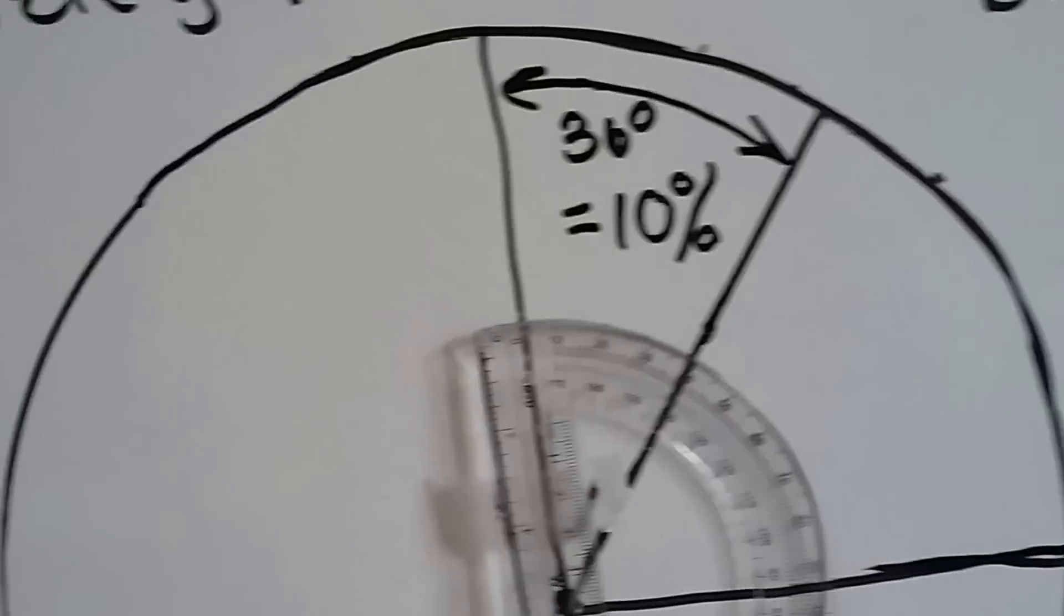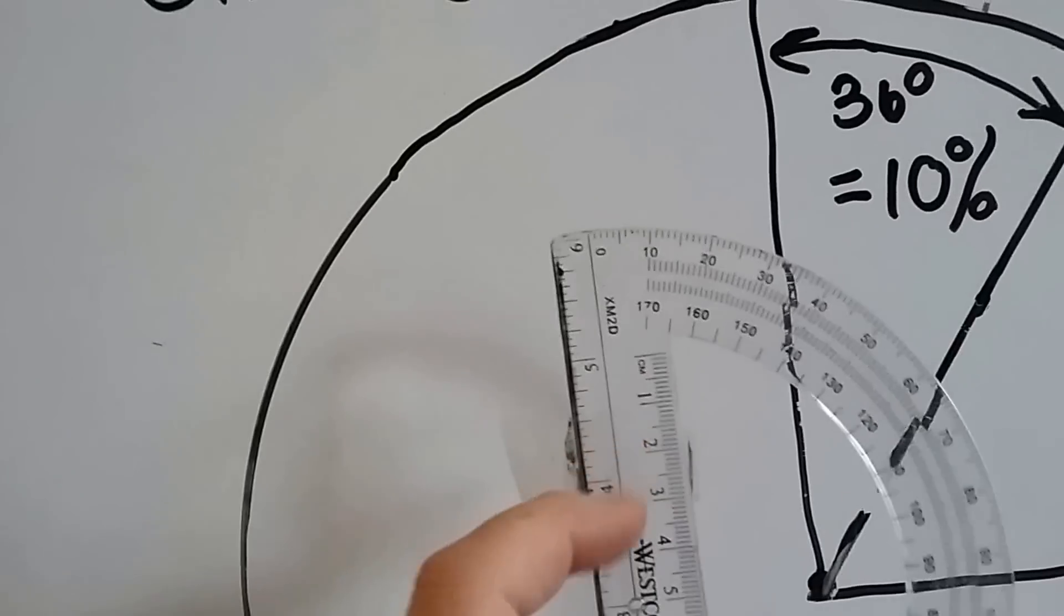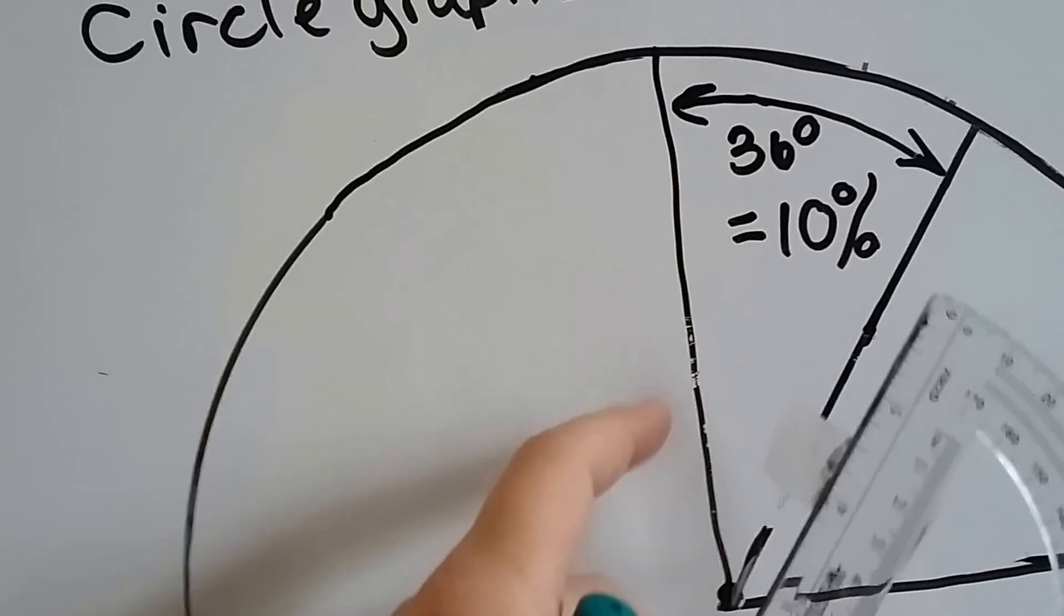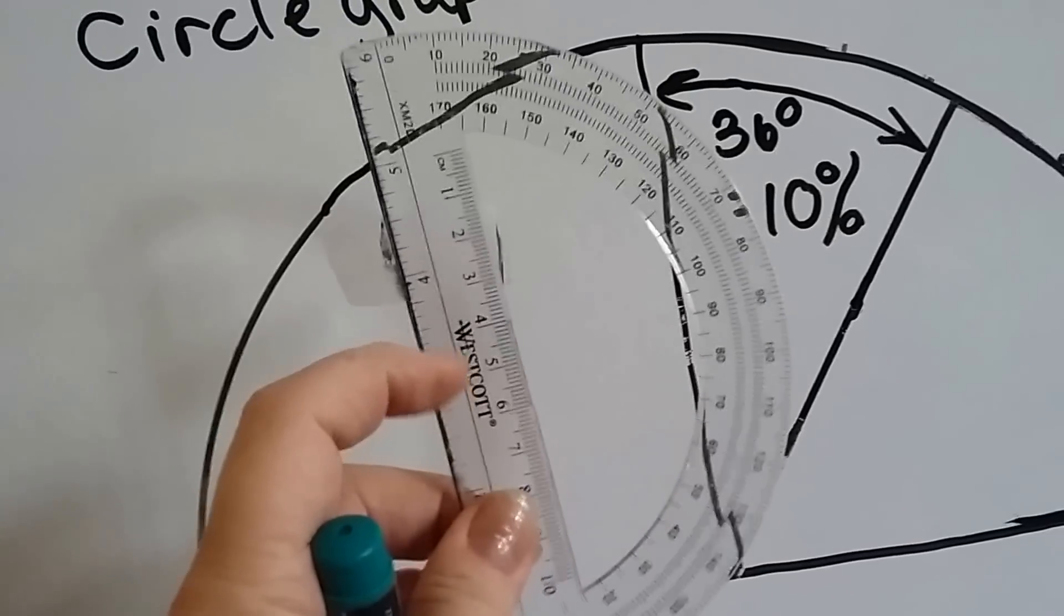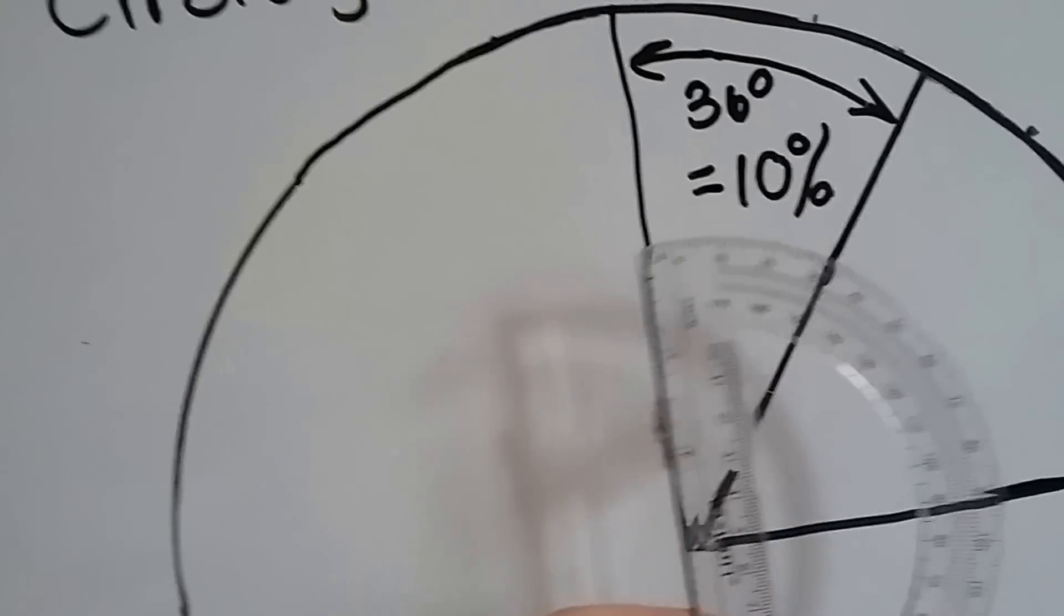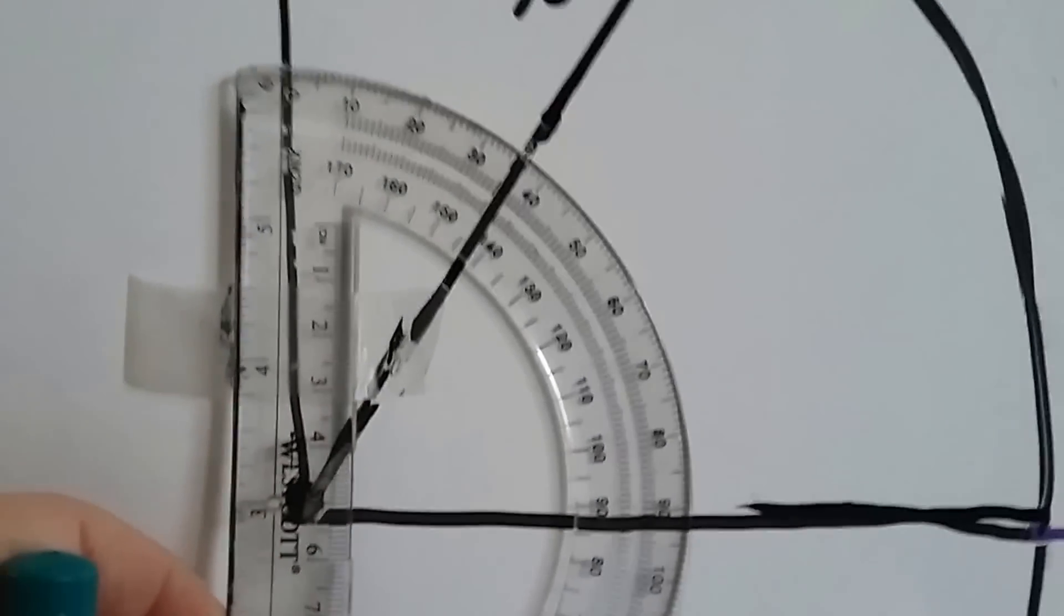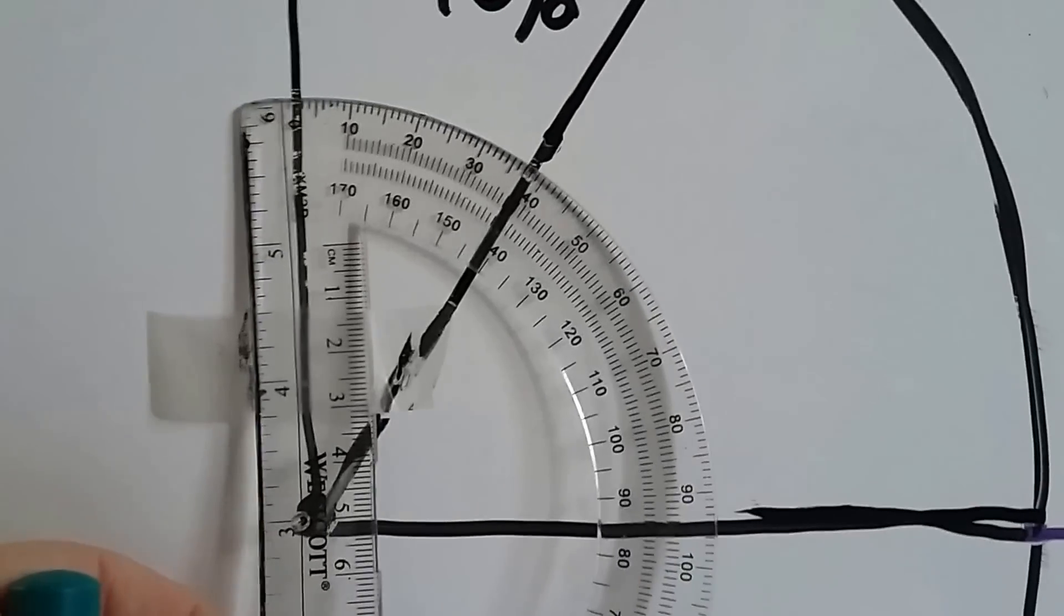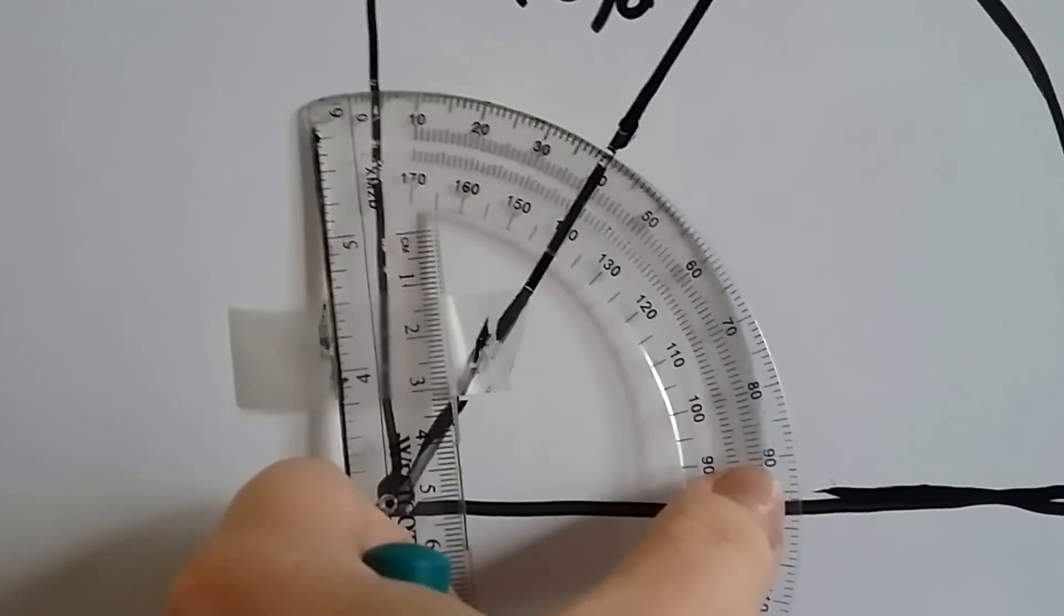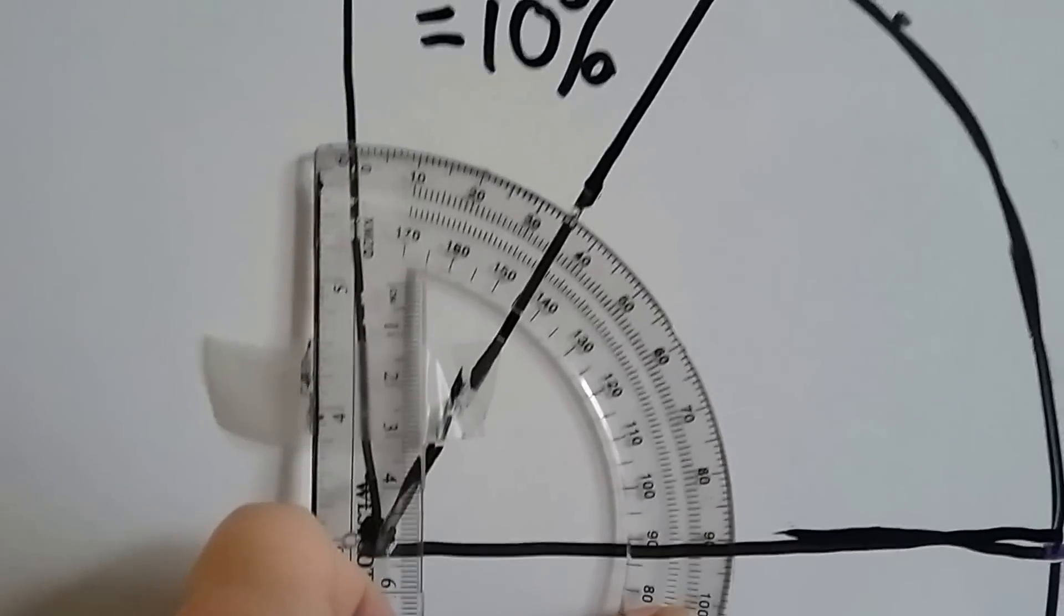By lining this up with this line right here along this line and the hole along with the center of our circle, we can line it up and we can see that it lines up with 90 degrees. Can you see this right here? It says 90 degrees.